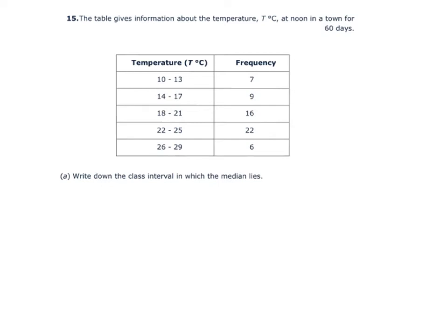Question 15, we're asked to find the median. So the first thing I need to do is work out the total frequency, and there's 60 people. That means that the median lies between the 30th and the 31st person.